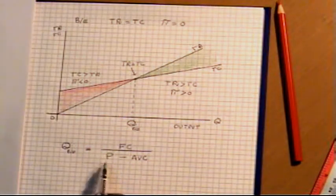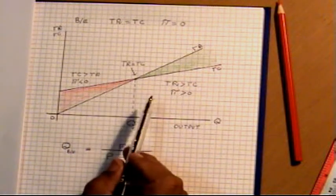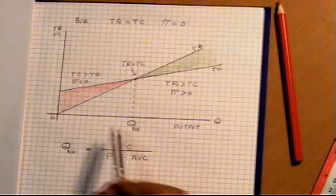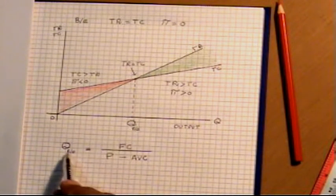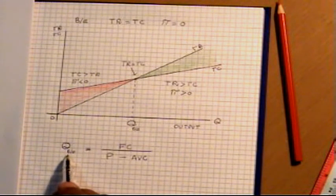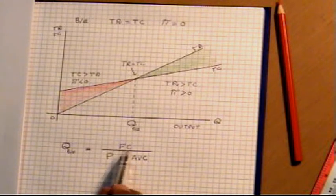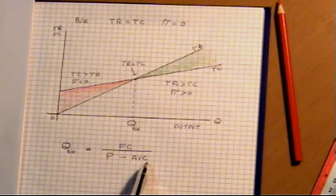In this video, I am going to verify the mathematical rule for the breakeven point that we have discussed in my previous video. Here in this lesson, we will prove this rule that breakeven quantity is equal to the fixed cost divided by price minus average variable cost.